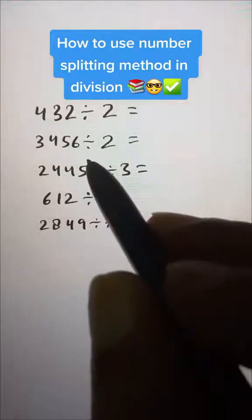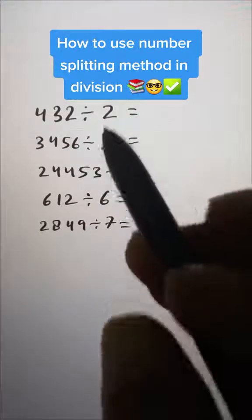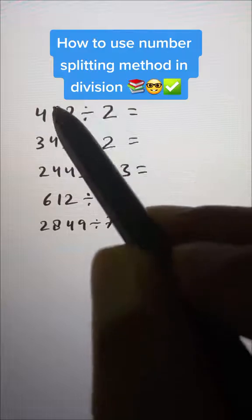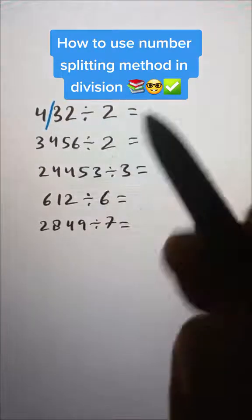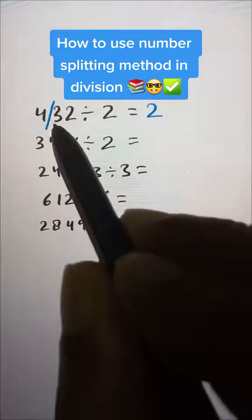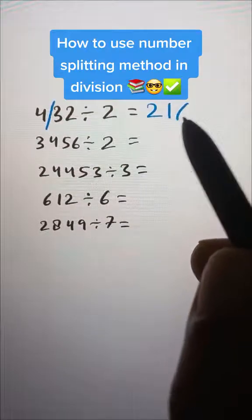Sometimes calculation becomes very easy by using the number splitting technique. Let's say we split it here. Half of 4 is 2 and half of 32 is 16. That's our answer, 216.